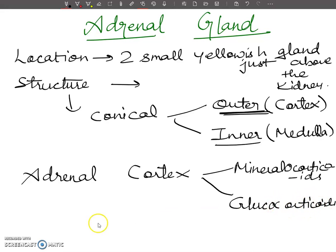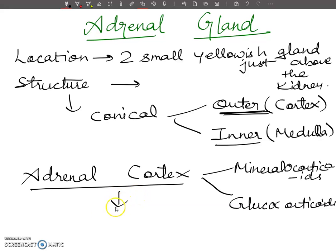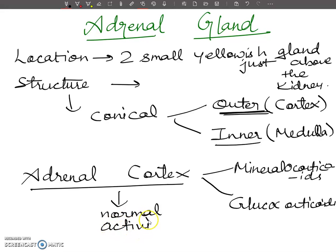The hormones secreted from the adrenal cortex are essential for the normal activities of the human body. It is very important to understand their role. These hormones are essential for the normal functioning of the human body.